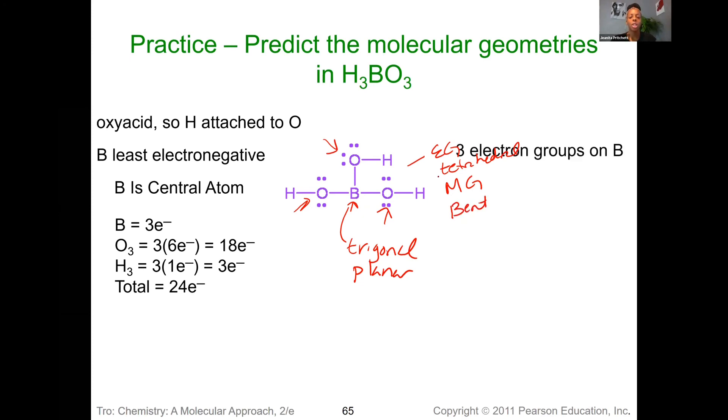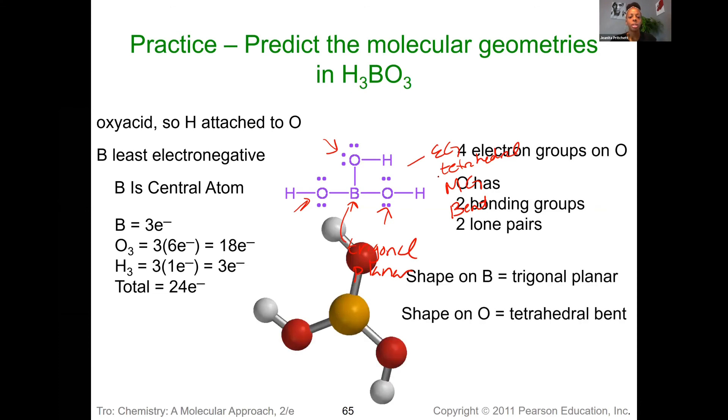And so then the actual shape that we're going to end up seeing would end up looking something like so. But again, you see this trigonal planar, the triangle, and then the bent pieces that are here.